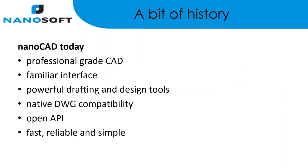NanoCAD today, ten years later, has grown up into a serious product — professional-grade CAD, not a baby CAD program. It has a familiar interface: the standard toolbar-type interface, the command-line interface, designed from the ground up to be work-alike compatible. It has a full set of drafting and design tools — the exact same kind you'd expect in AutoCAD — native DWG compatibility, a very open API with multiple programming interfaces, very fast, very reliable, simple, and also economical.